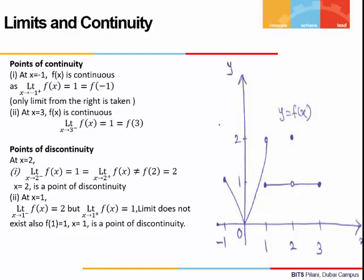Let's move on to another question. In this graph, there is no function given on the left side. So if we check whether x = -1 is a point of continuity, the only option is to approach -1 from the right. When we approach -1 from the right, the function goes towards 1. The limit from the right is 1 and the value of the function is also 1. Hence the function is continuous at x = -1.